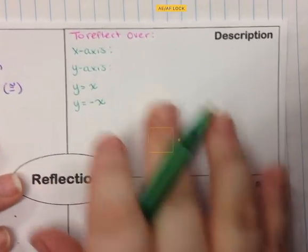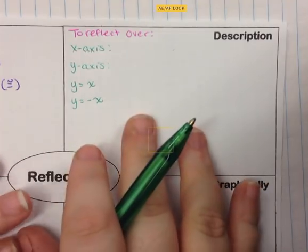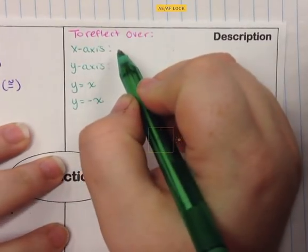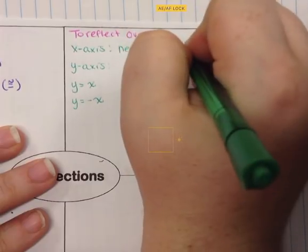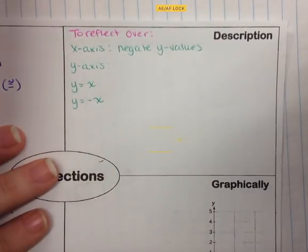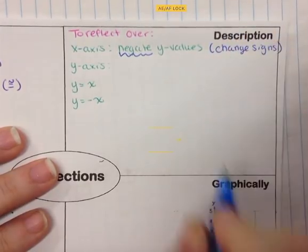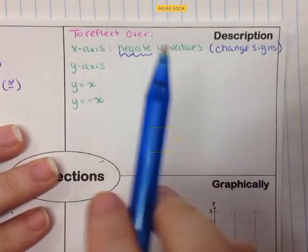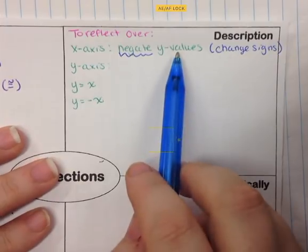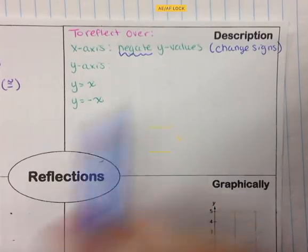If you understand the words, you can apply them to the coordinates and not have to worry about memorizing the mapping rule — though you should know it. To reflect over the x-axis, you negate the y-values. To negate means to change the sign — not just make negative. If the y-value is positive it becomes negative, but if the y-value was negative it becomes positive. You change the sign only on that coordinate, and you do it to all coordinates of the figure but only to the y-values.